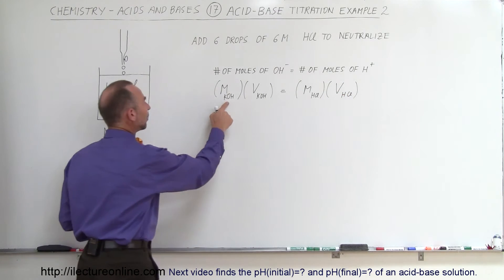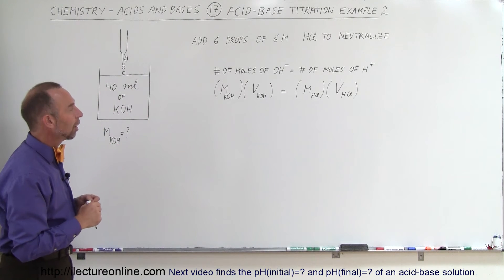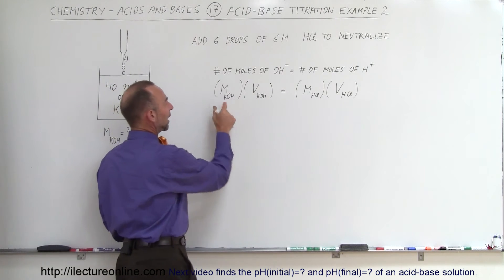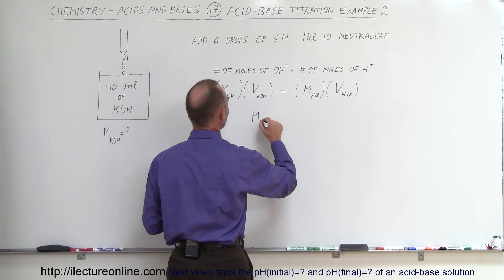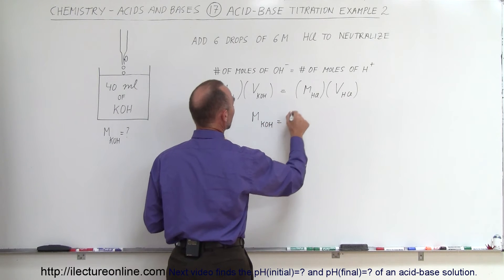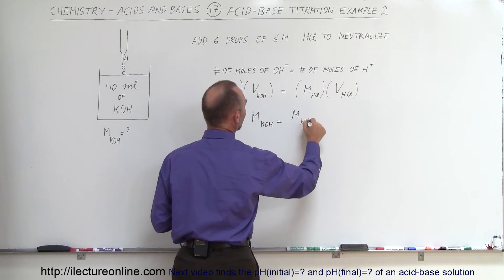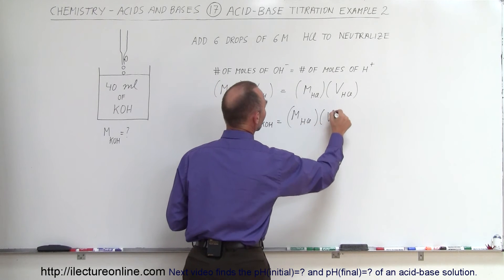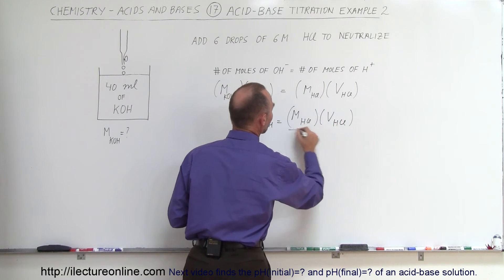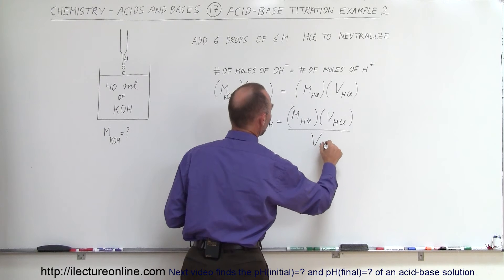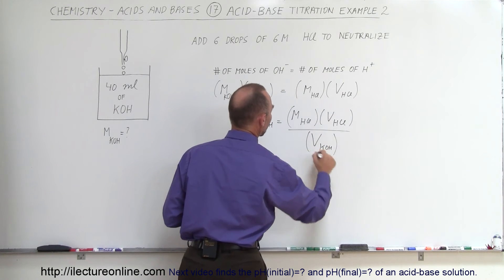Since we're looking for the molarity, the concentration of the potassium hydroxide, I solve this equation for that, and I get the molarity of the potassium hydroxide will be equal to the molarity of the hydrochloric acid, times the volume of the hydrochloric acid that was added, divided by the volume of the potassium hydroxide that was already there.